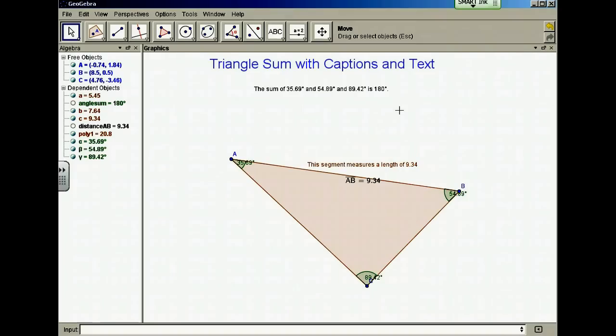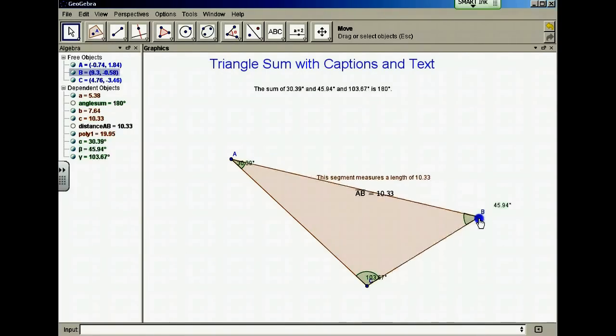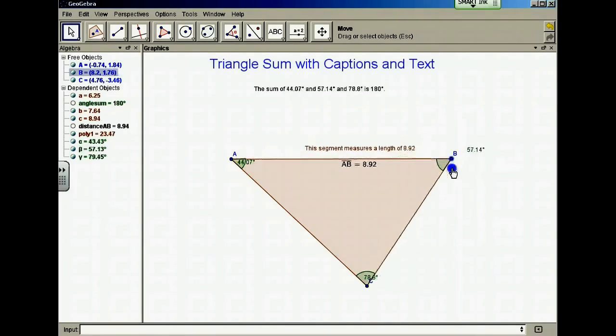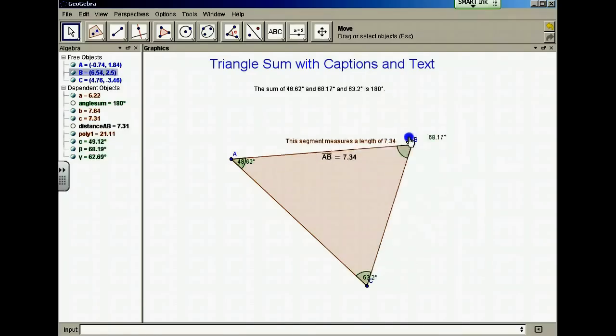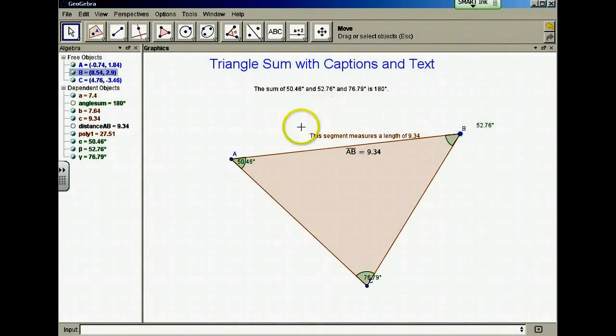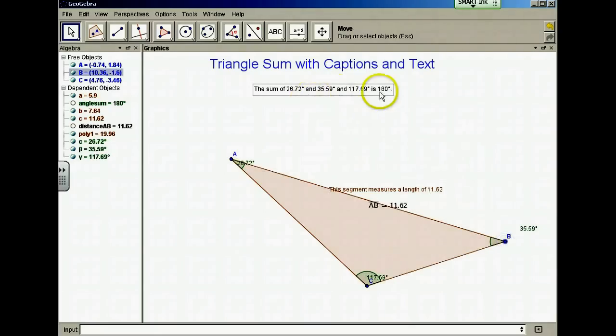Of course, GeoGebra is a dynamic program. So if I change any part of my triangle, then all of my angles will continually change. But no matter what shape I make this triangle, the sum of the angles always ends up 180 degrees.